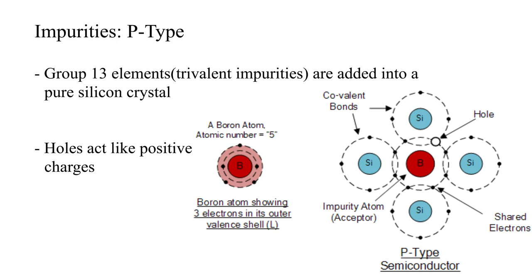Alternatively, if some group 13 elements, which are called trivalent impurities, are added into a pure silicon crystal, a p-type semiconductor is obtained. Boron atoms, for instance, have three electrons in their outer shell and can readily form three steady covalent bonds with nearby silicon atoms.